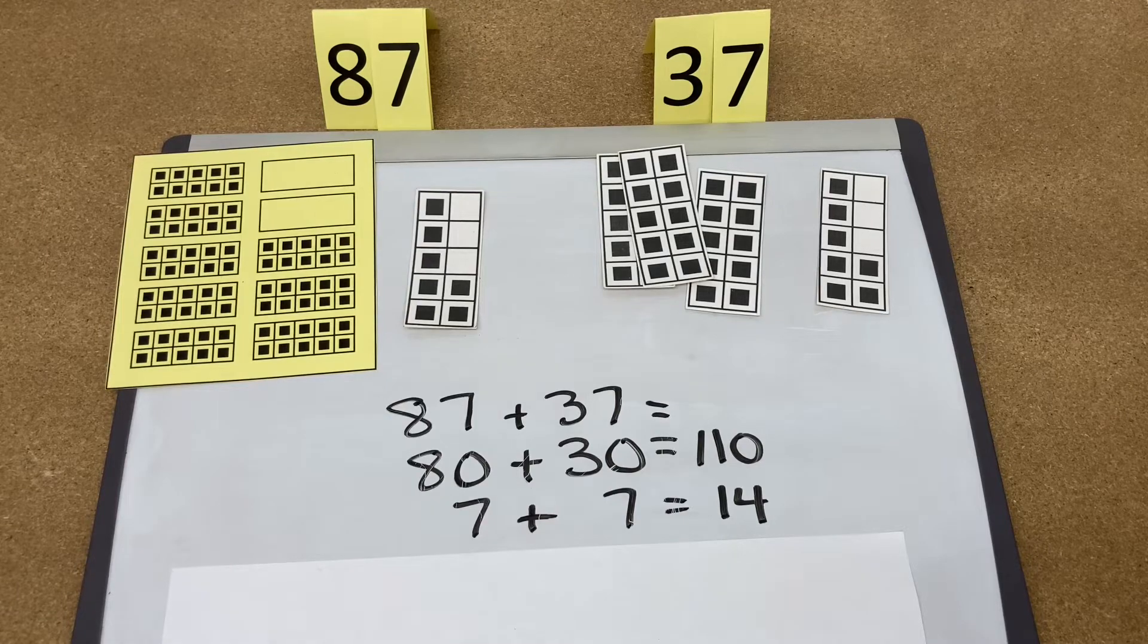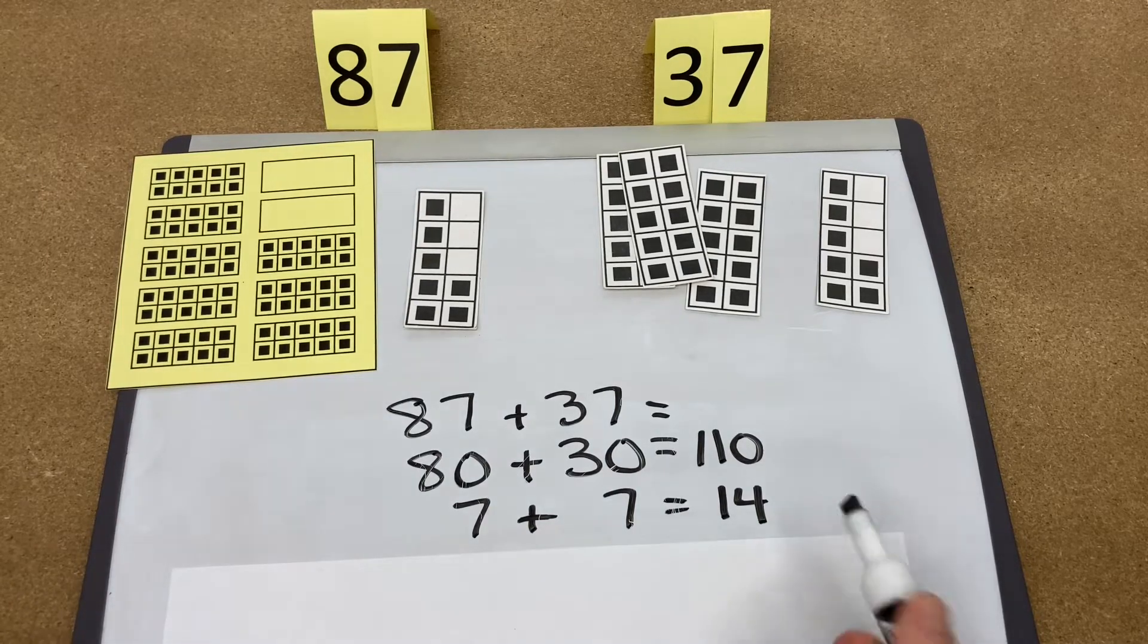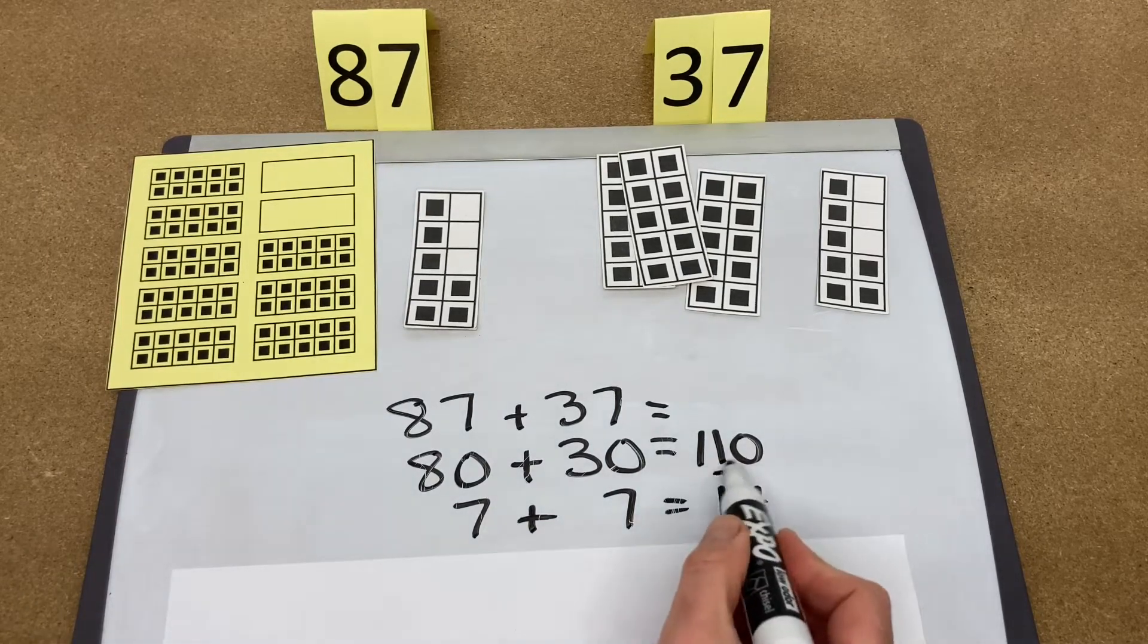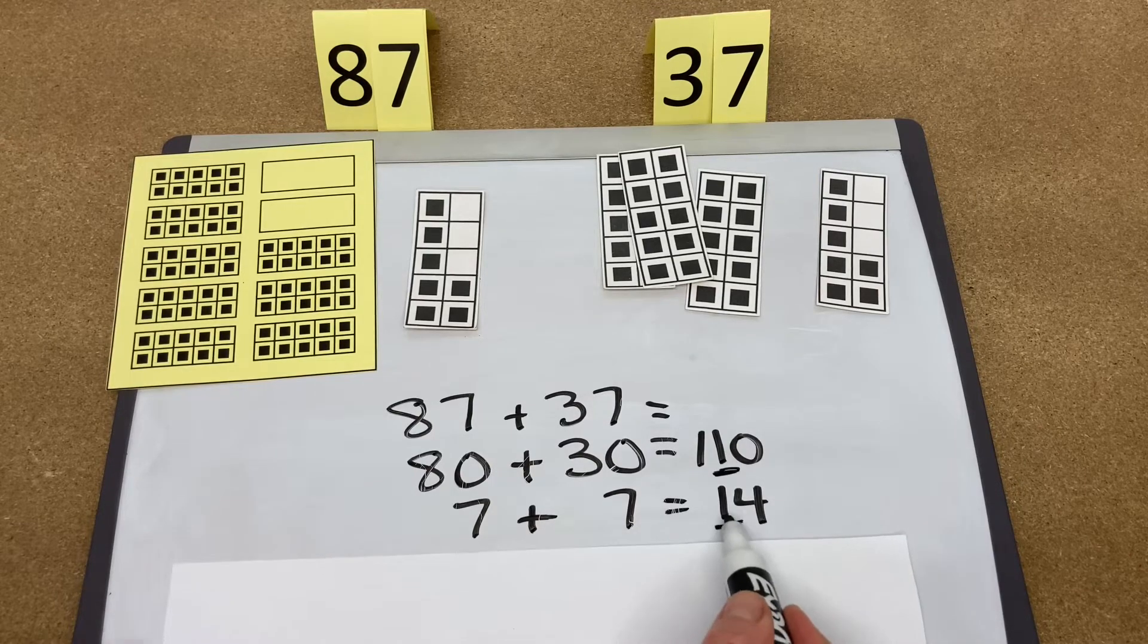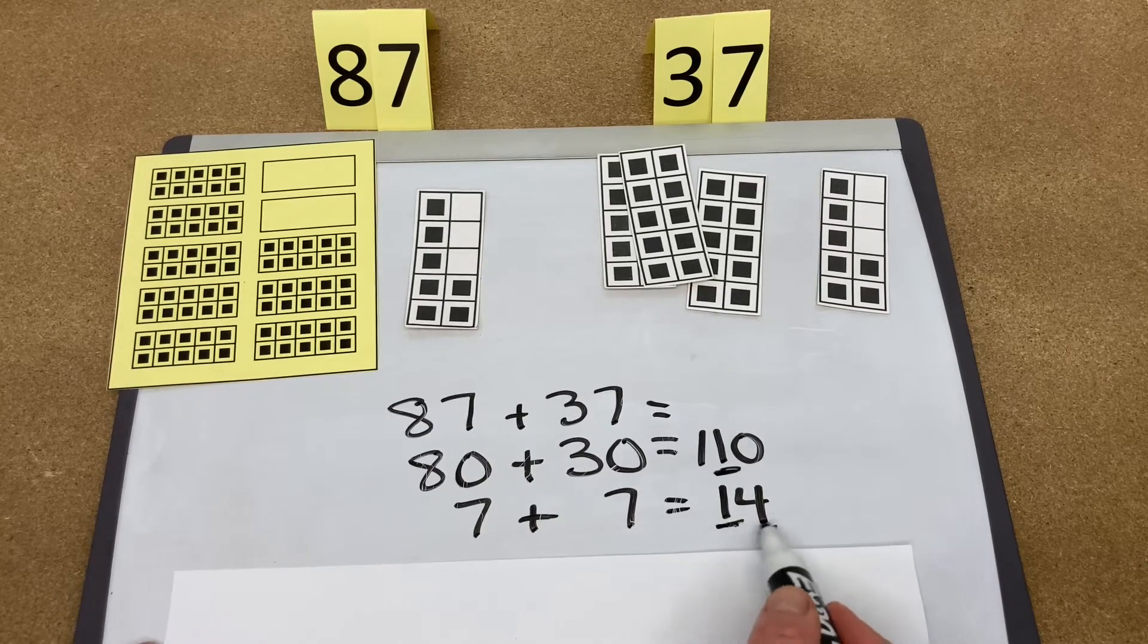Then we want to add the numbers 110 plus 14. We look for similar numbers. We know that here's 10, there's another 10 here, giving us 20, with a 4, 24.